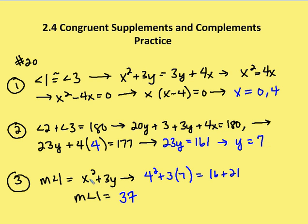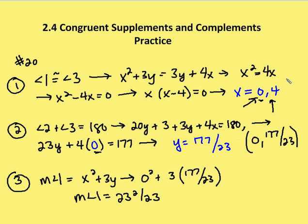When x equals 4, the measure of angle 1 is 4 squared plus 3 times 7, which equals 37. So the measure when x is 4 is 37, and the measure when x is 0 is 23 and 2 thirds. You have those two answers for this one problem.